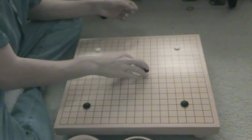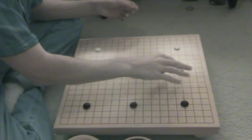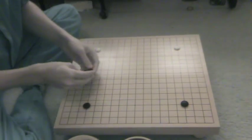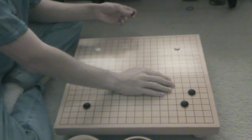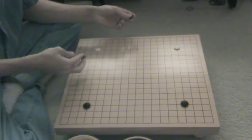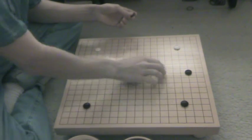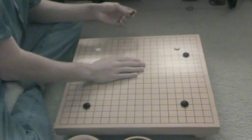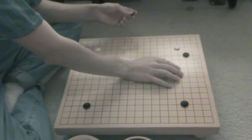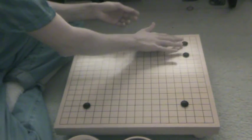The star point is meant for building a large framework and getting the big moyo. So since you're not trying to enclose your corner, then you need to move along the sides. But open corners before sides. So this is kind of moving along the side while also threatening to come into White's corner.